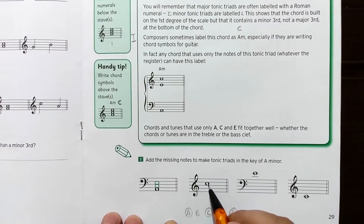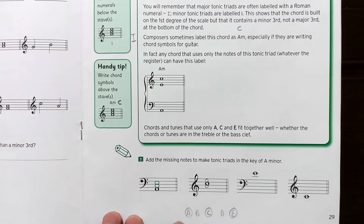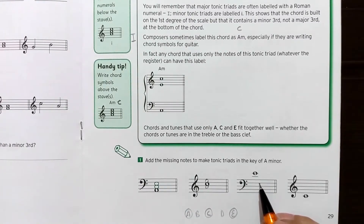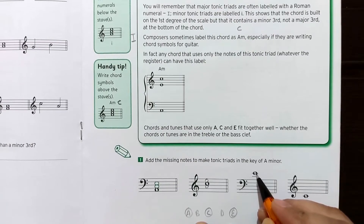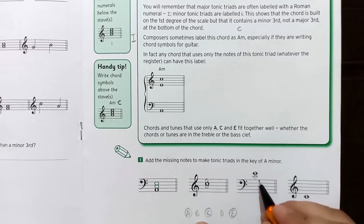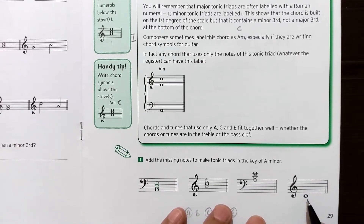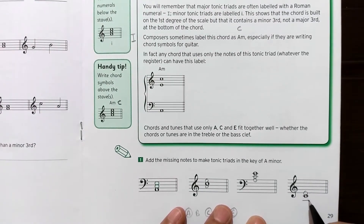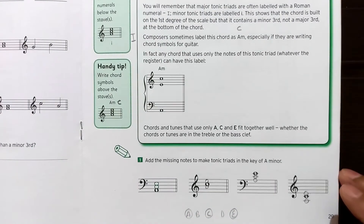To make the tonic triad we need A as the tonic note. So if we have C, we need to add A, and then E on top of that — that completes the chord. Here you can see this note is C, this is D, this is E, so we write C here and A here — that makes an A minor chord. This is middle C, so we need one note up (E) and one note down to complete the A minor chord.